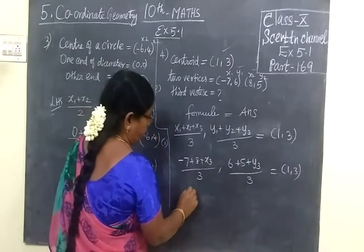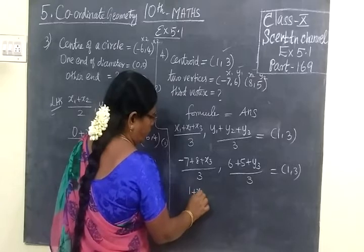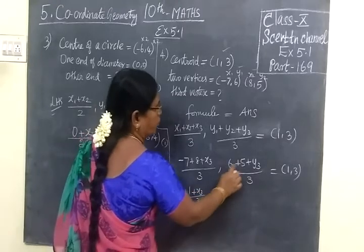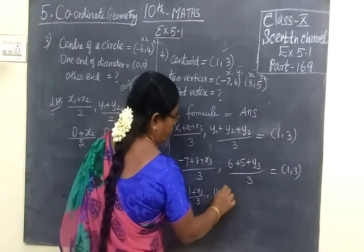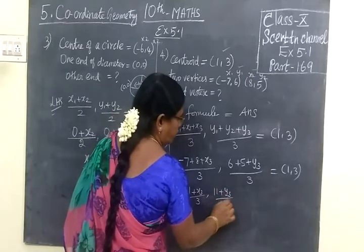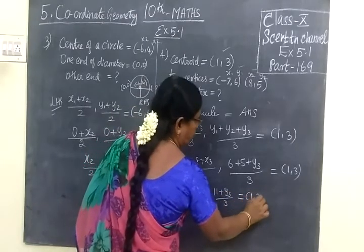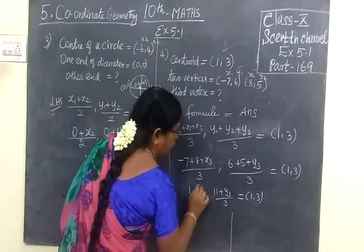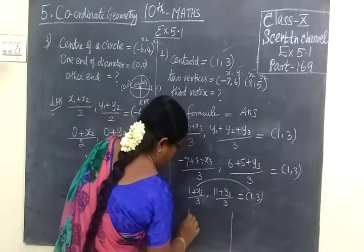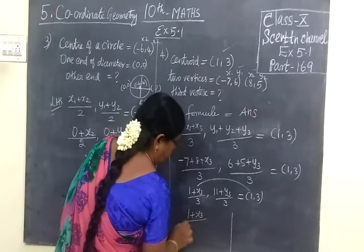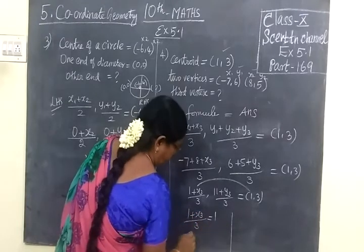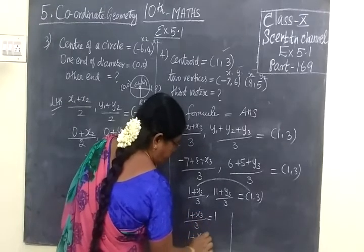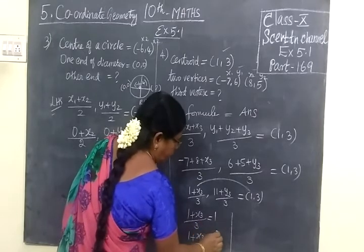So -7 plus 8 is 1. So 1 plus x3 by 3, 6 plus 5 is 11, so 11 plus y3 by 3 equal to (1,3). So equating first coordinate, 1 plus x3 by 3 equal to 1. So 1 plus x3 equal to 3 into 1, which is 3.